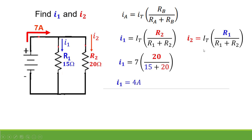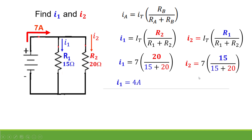On the other hand, I₂ equals I_T multiplied by R₁ — the opposite resistance. To get I₂, you take the total current entering the network multiplied by the opposite resistance divided by the sum of the resistances in the network. That is 7 multiplied by 15 divided by (15 plus 20), and you get 3 amperes.